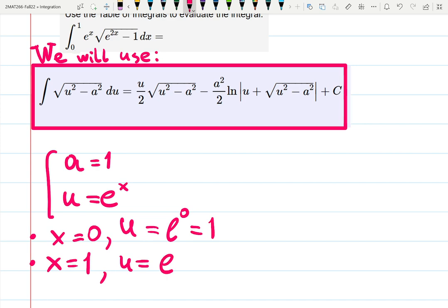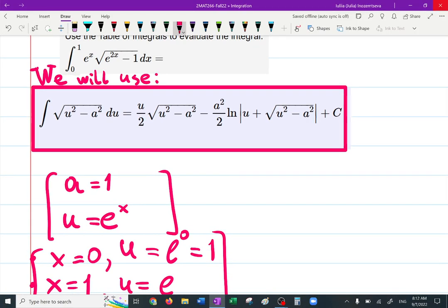u equals e^0, which is one. When x is one, u is e^1. So we will have this table used. Basically we're doing u-substitution, but we want to match the result right away.